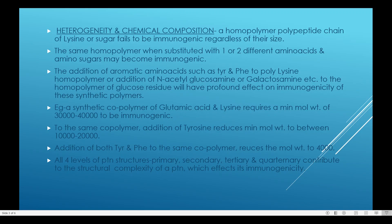Not only molecular weight and size, but another factor plays a role here — that is heterogeneity. A molecule composed of different residues or combinations is more likely to act as a good immunogen. The same homopolymer, when substituted with one or two different amino acids and amino sugars, may become immunogenic. Addition of aromatic amino acids such as tyrosine and phenylalanine to a polylysine homopolymer, or addition of N-acetyl glucosamine or galactosamine to the homopolymer of glucose residues, will have a profound effect on immunogenicity of these synthetic polymers.